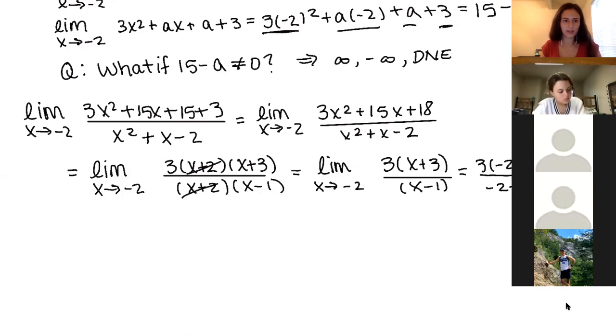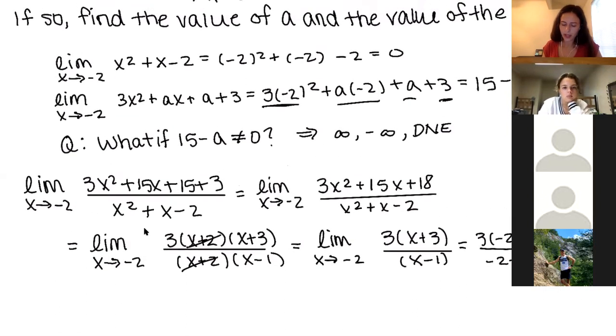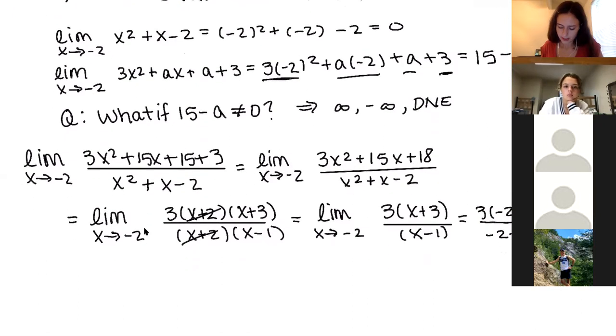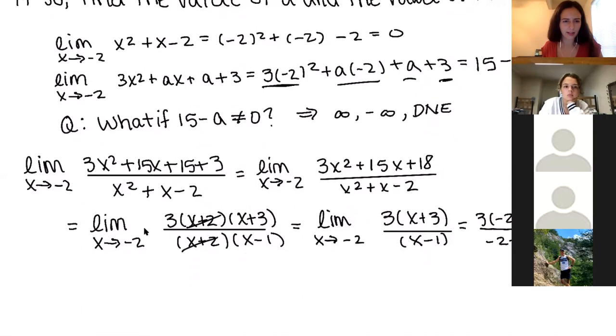All right, so if you have questions about the warm-up problem, please type them now. Yeah, here we go. So Dan asked: any other number besides 15 would give a non-finite number? So if we had a not equal to 15, then the numerator would not be 0, so we wouldn't have an indeterminate form. And we would have to do a little bit more work to see exactly where it's going - if it's going positive infinity, negative infinity, what's happening. So did that answer your question?